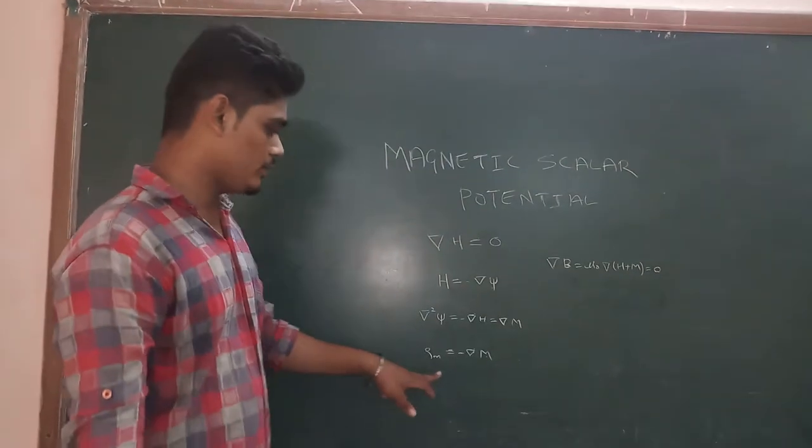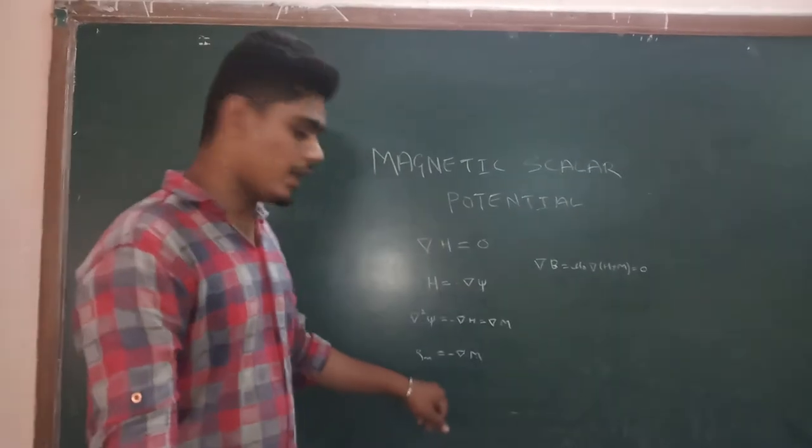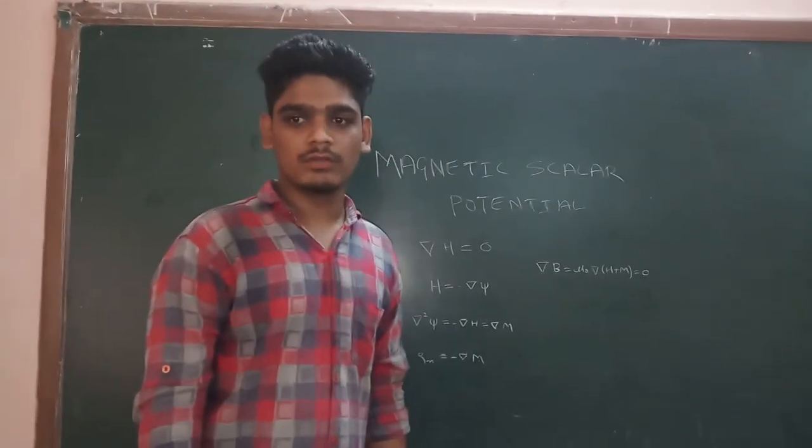Therefore, ρₘ = -∇·M, which is called the magnetic charge density.